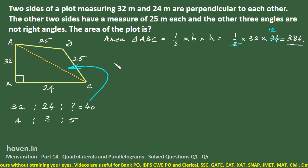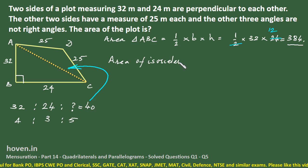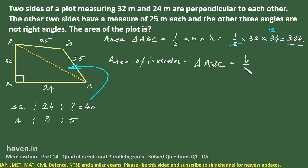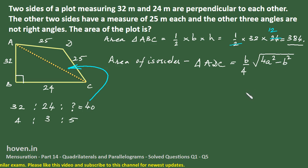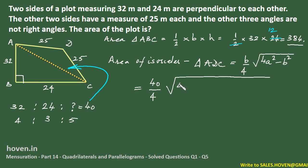And now I am in a position to find out the area of the isosceles triangle. I will write area of isosceles triangle, that is triangle ADC is equal to, I will write the formula here, b by 4 square root of 4a square minus b square, where a is the equal side and b is the unequal side. Now we can substitute the value of b as 40. It becomes 40 by 4 square root of 4 into 25 square minus 40 square.